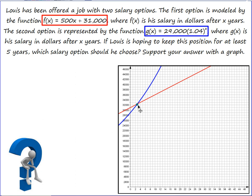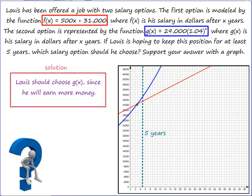The two salary options would pay him exactly the same amount right around three years. It's actually just a little before three years, but we'll just call it three years after he starts his job. The question says if he wants to keep this position for at least five years, which option should he choose? So we're going to put in a line at five years and at least five years means five or more. So we're looking at the right half of the graph. G(x) is definitely the better option if he wants to make more money. So that's going to be my answer.